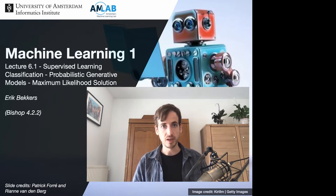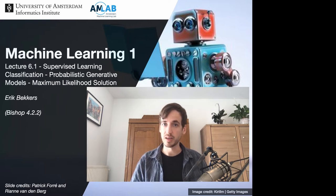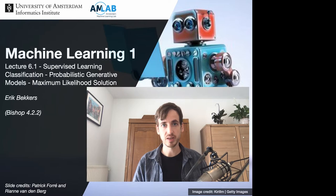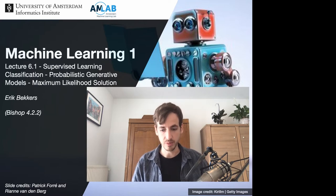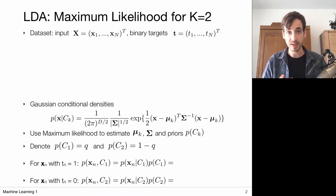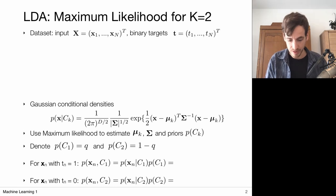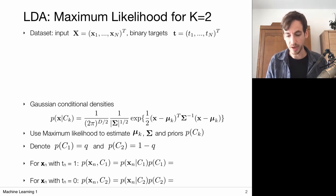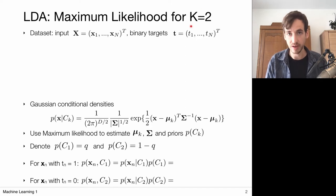So what we did was define how we can parameterize our distributions, and now in this video we are actually going to find the optimal set of parameters via the maximum likelihood principle. The setting is that we have a data set of inputs with corresponding binary targets, so in this video we're going to consider the k=2 case.